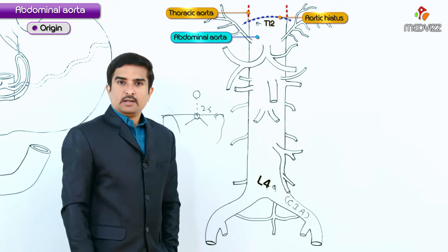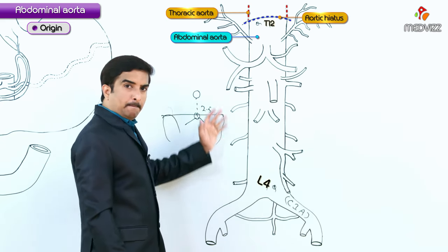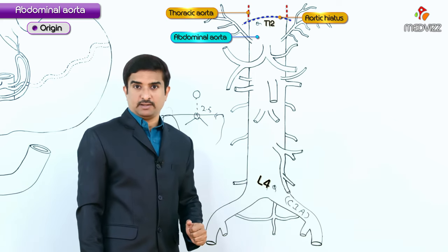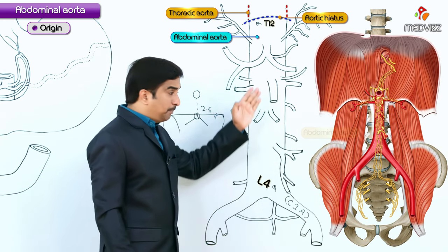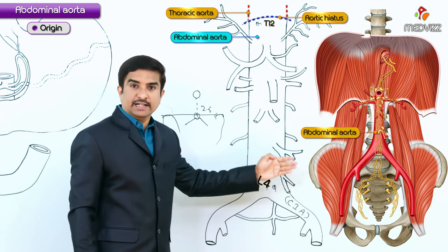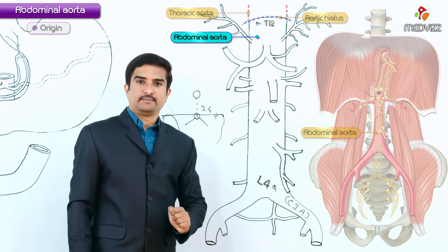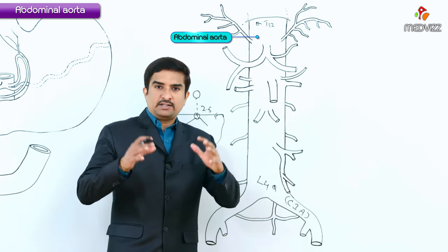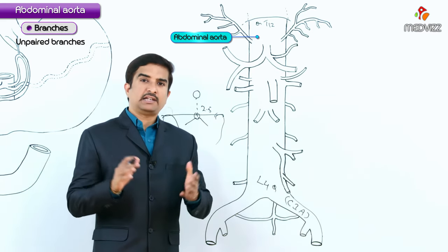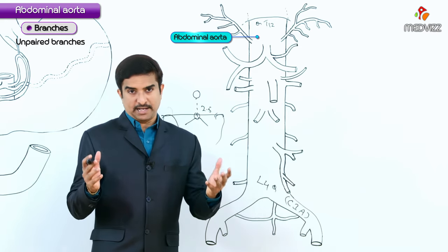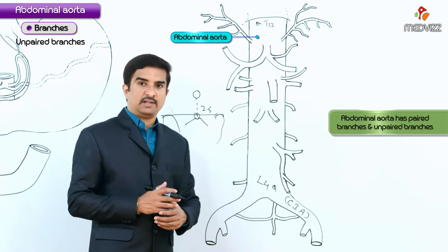As the abdominal aorta passes through the posterior abdominal region, the prevertebral plexus of nerves and ganglia covers its anterior surface. Now let us discuss the branches of the abdominal aorta. The abdominal aorta has both paired and unpaired branches.